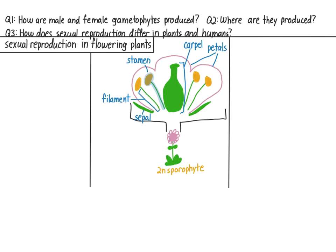The stalk of a stamen is called the filament, and this is the anther. We'll label a few parts of the carpel as well. This top part is the stigma, and inside of the carpel we have the ovary. Within the ovary are ovules. Development of the pollen with its gametophyte occurs in the anther, while development of the female gametophyte occurs within the ovule. Each stamen has one anther and one filament; parts of the carpel include the stigma and the ovary, which houses the ovules.